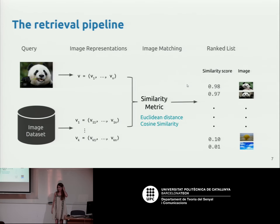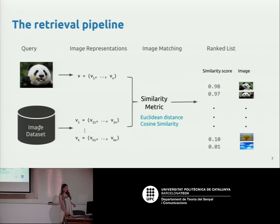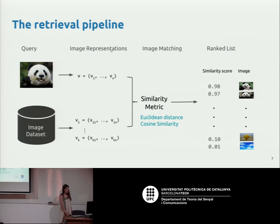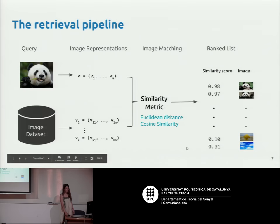This task has been around for a while, and before deep learning quite a lot of approaches were proposed. Usually the system works like this: you have a query and a dataset of images, you choose an image representation — you don't want to work directly with pixels because it's not efficient — so you compute something on the pixels and come up with a vector of numbers. You compute that for the query and the dataset images, then compare using clipping distance or cosine similarity, and rank from most relevant to least relevant.